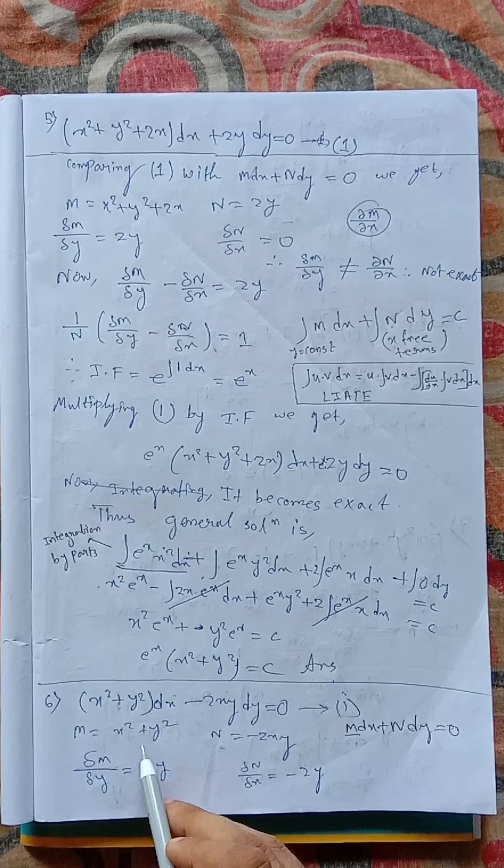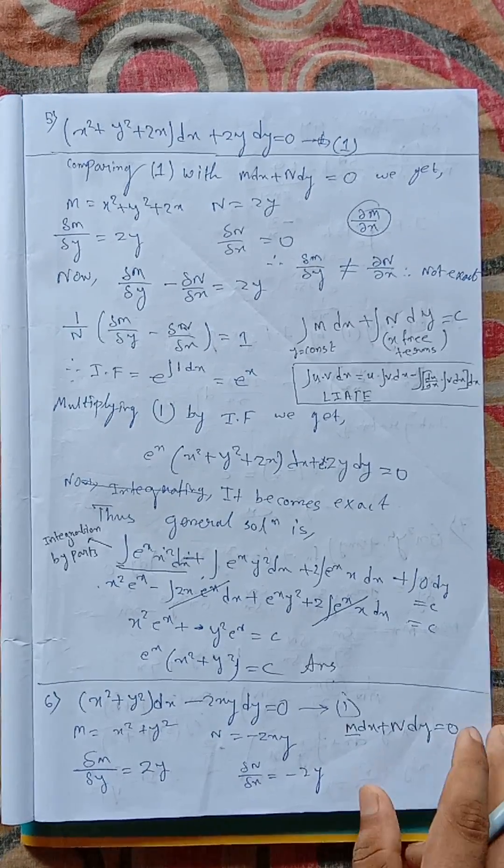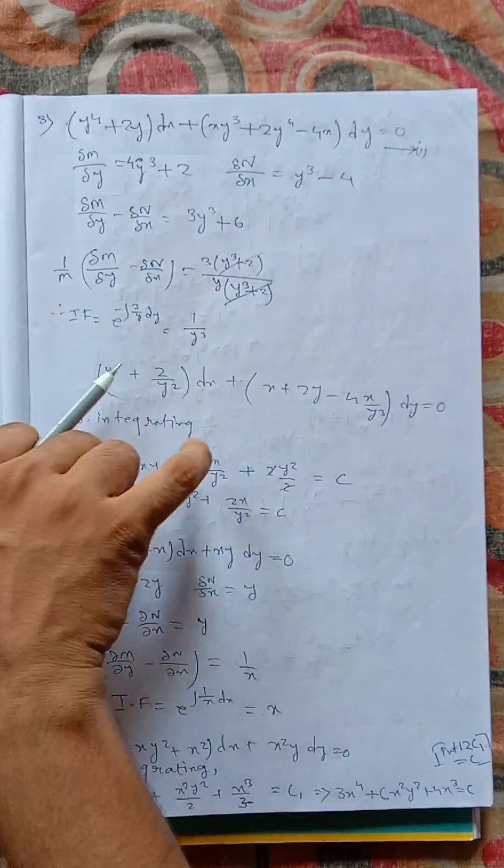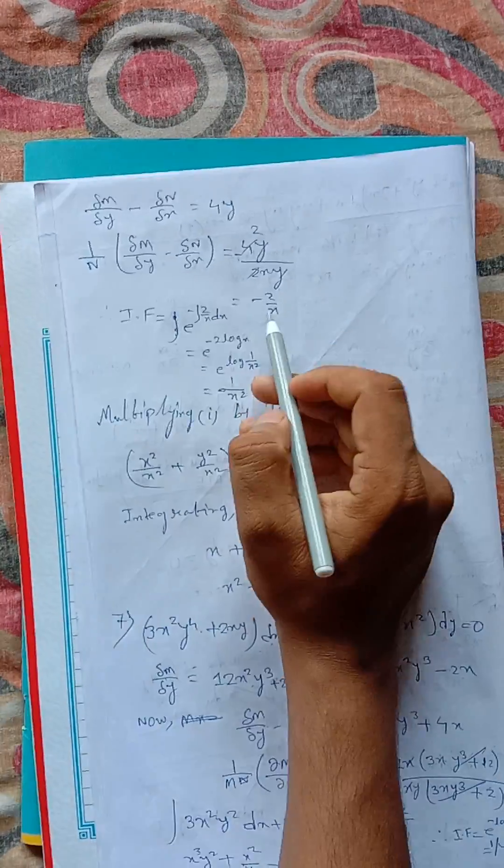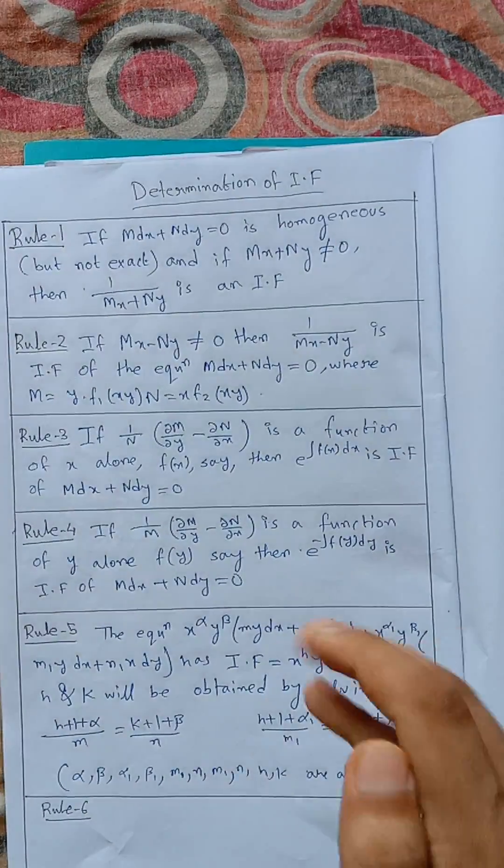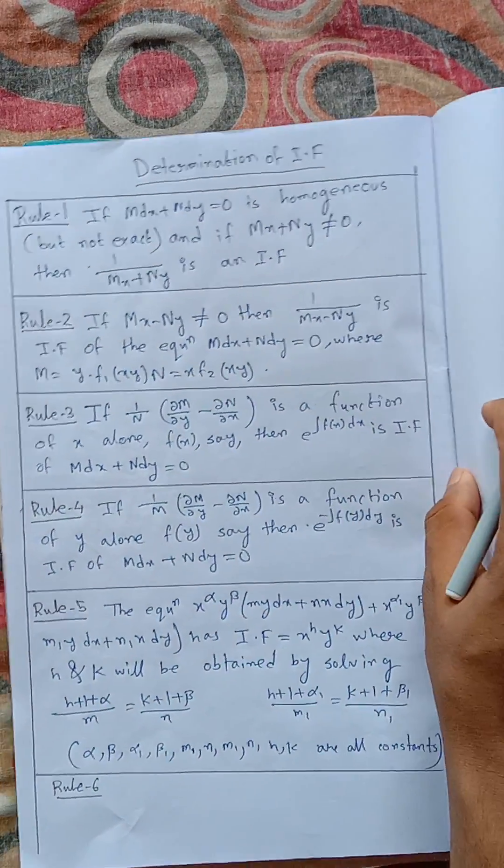So m is x square plus y square and n is minus 2xy. If we divide it by m then this would be difficult to solve and we all know that we have to use the simplest way to solve.